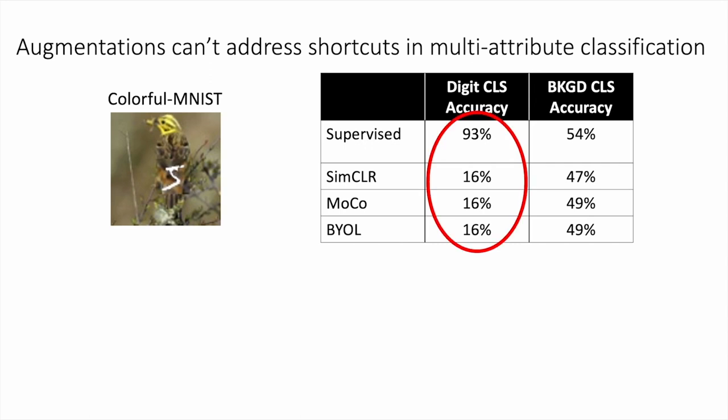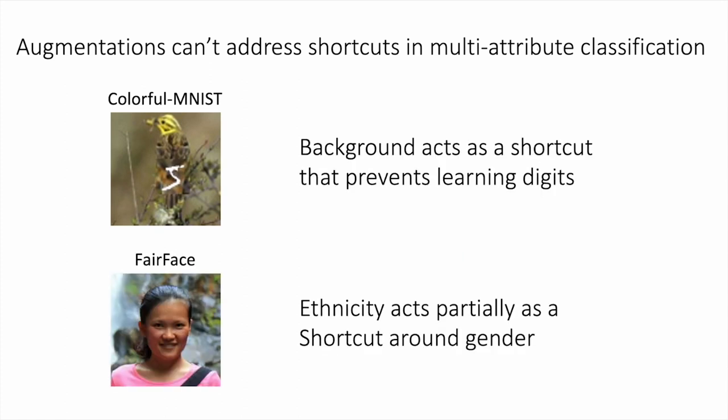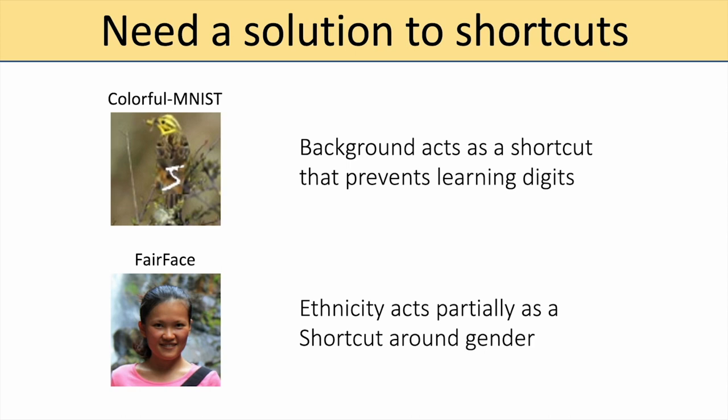Another example is human face attribute classification. Ethnicity can act as a shortcut for gender and age. This means that we need a solution for this shortcut problem that would allow us to generalize contrastive learning to more general settings.